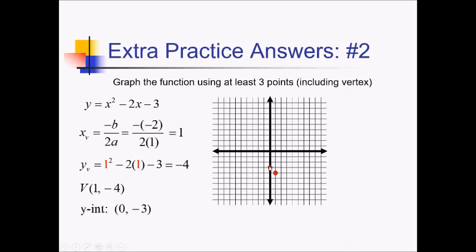That's right there. And we have the axis of symmetry going through the vertex, so you just have to flip that y-intercept over that line of reflection to get another point right there. And then draw the parabola through those three points.